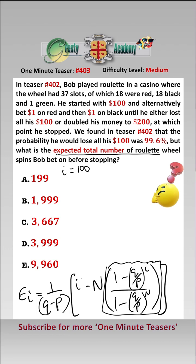I is equal to 100, his initial stake. N is equal to 200, which is the amount of money at which he would stop if he had won that amount. Q is the probability that he loses on any one spin, which is 19/37, and P is the probability that he wins on any one spin, which is 18/37. Sticking all that in, we get that E_100, which is what we seek, is equal to 1 over 1/37 times 100 minus 200 times...